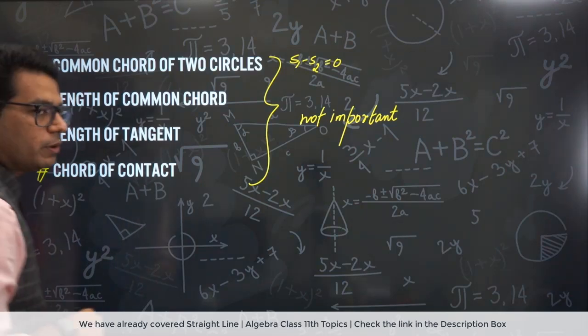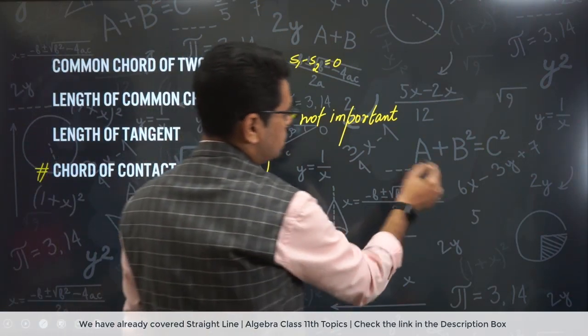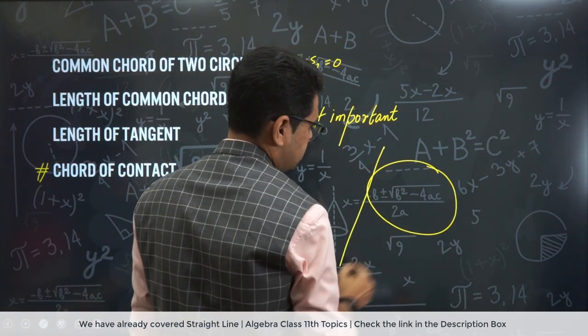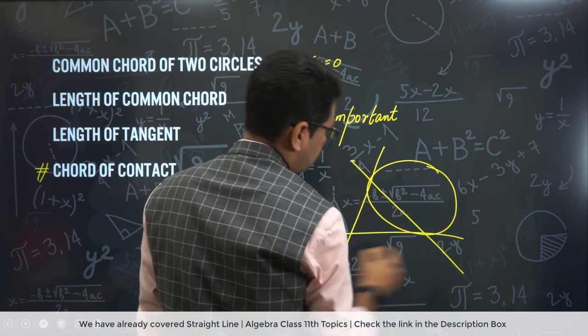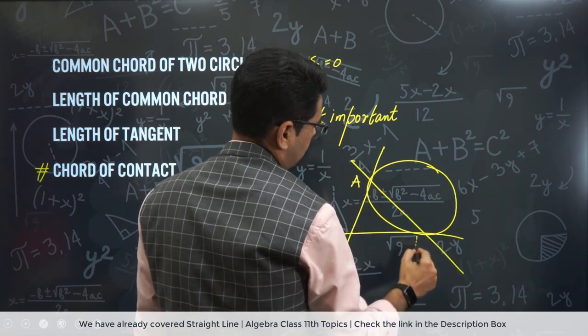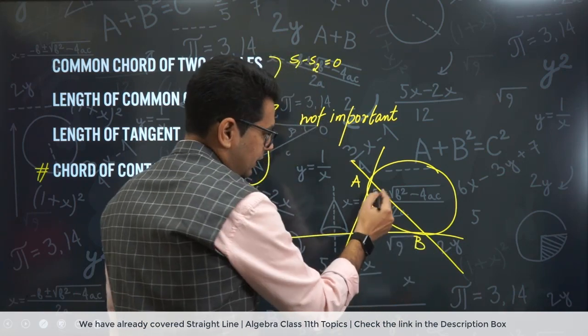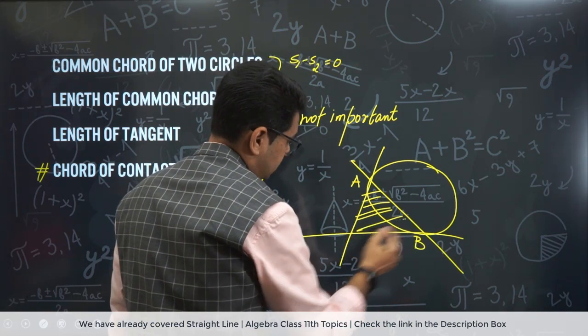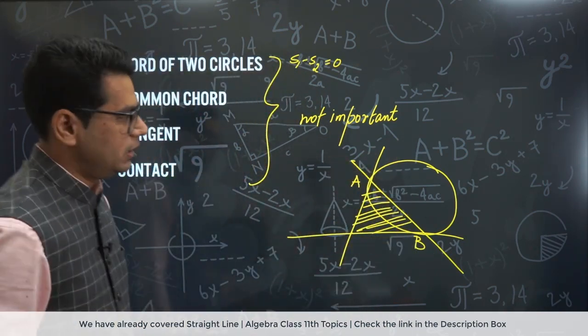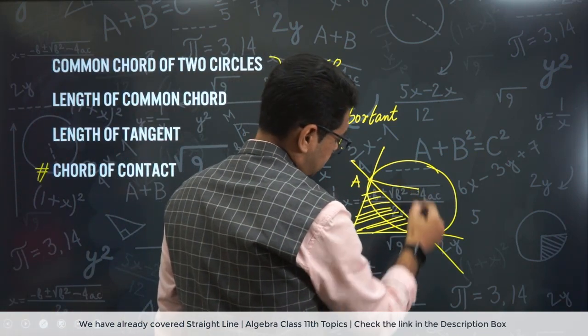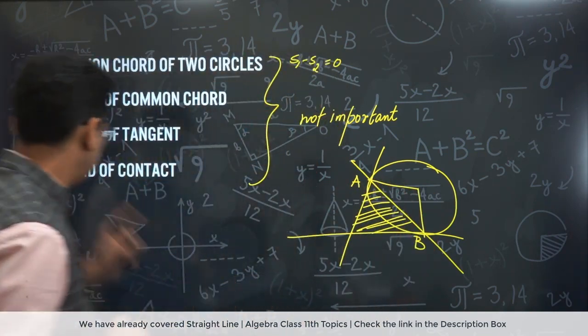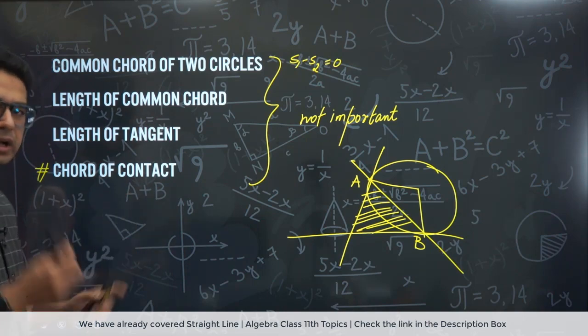Then this one. Chord of contact. Because questions are made on this. Chord of contact, what was it? That if you make a tangent from an external point, then the line which joins these points A and B. On this, questions like find the area of this triangle are made. Area of triangle. Make the chord, we join to the center. Questions can be made on this. Yes. So if something is important in this, then chord of contact has to be done.